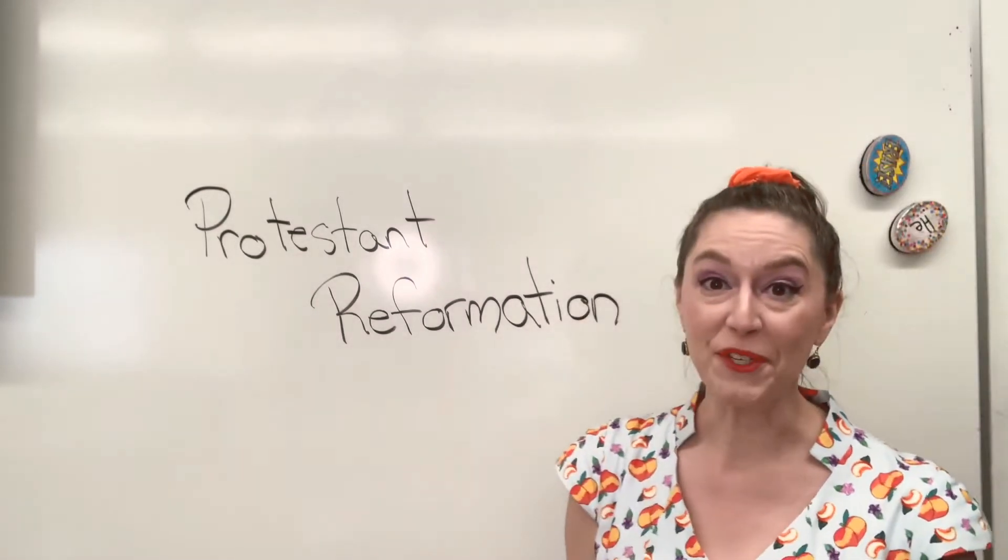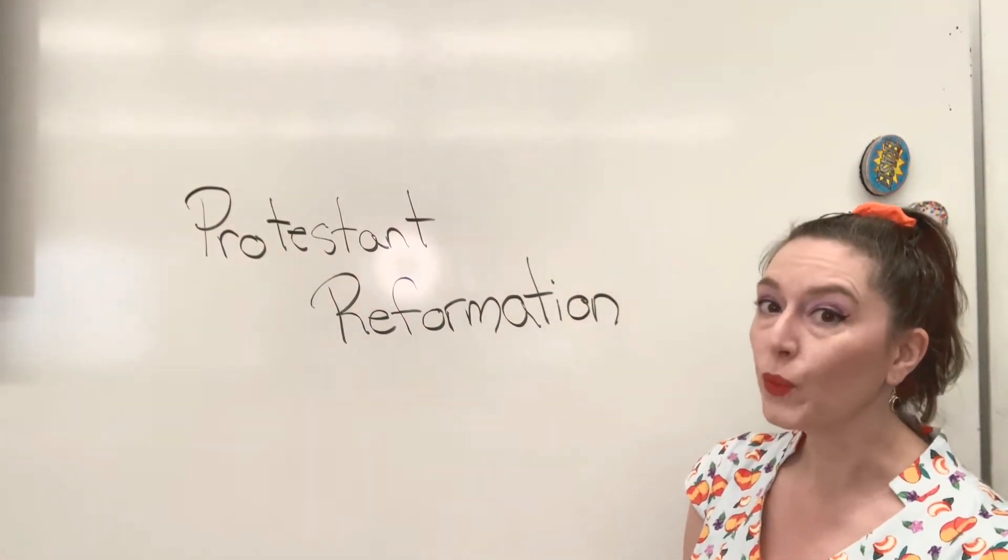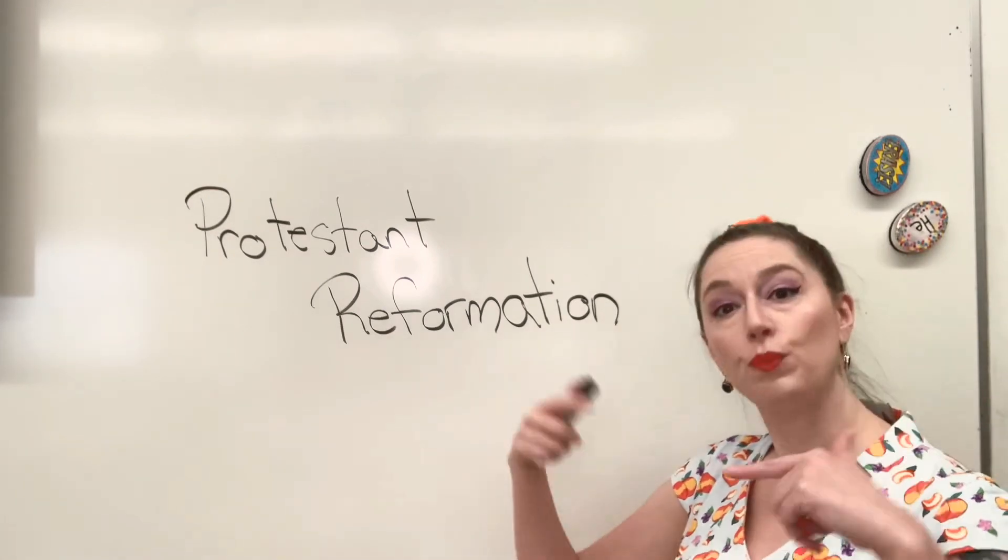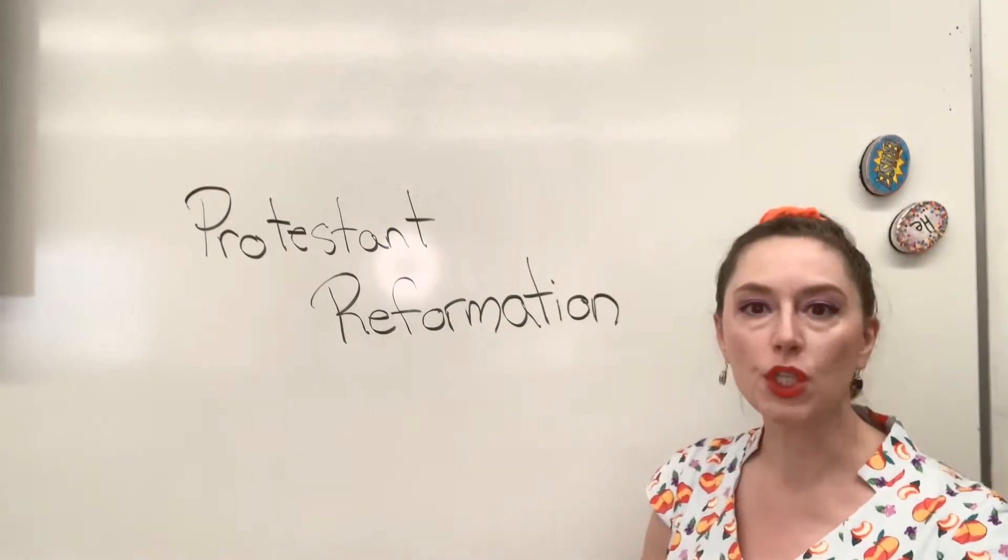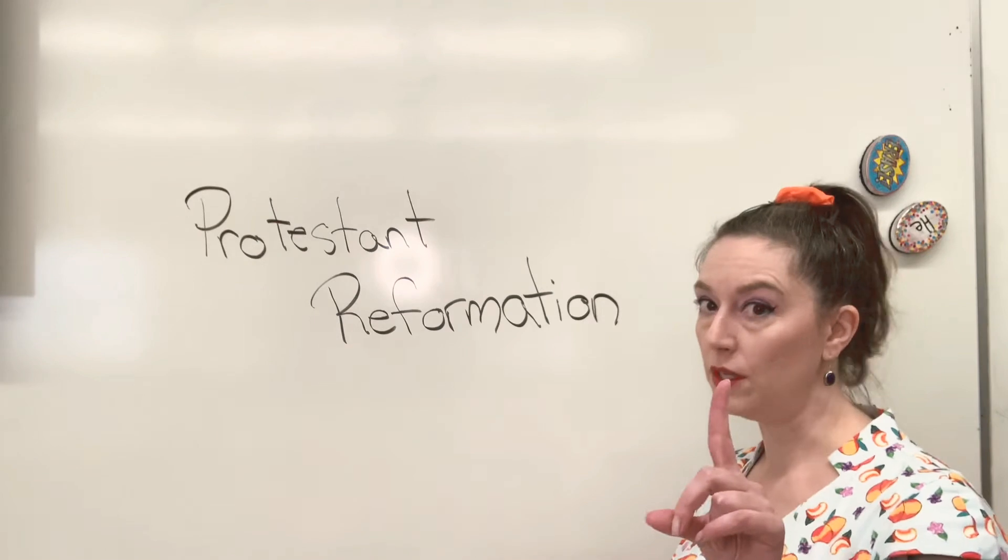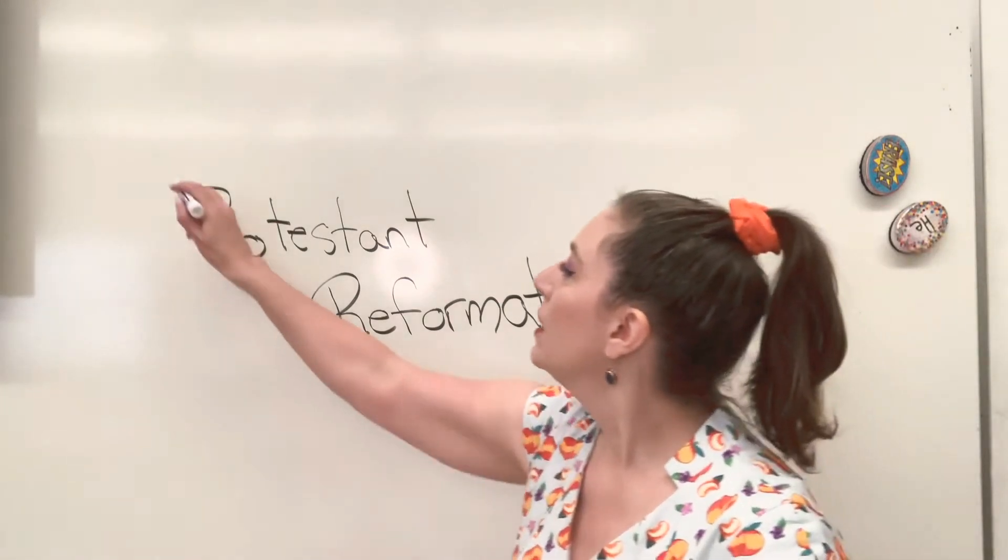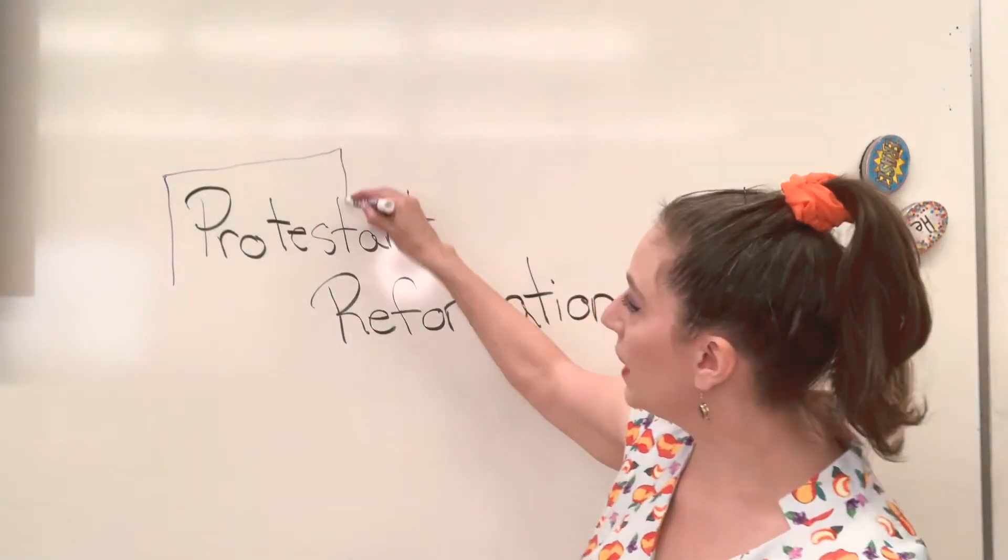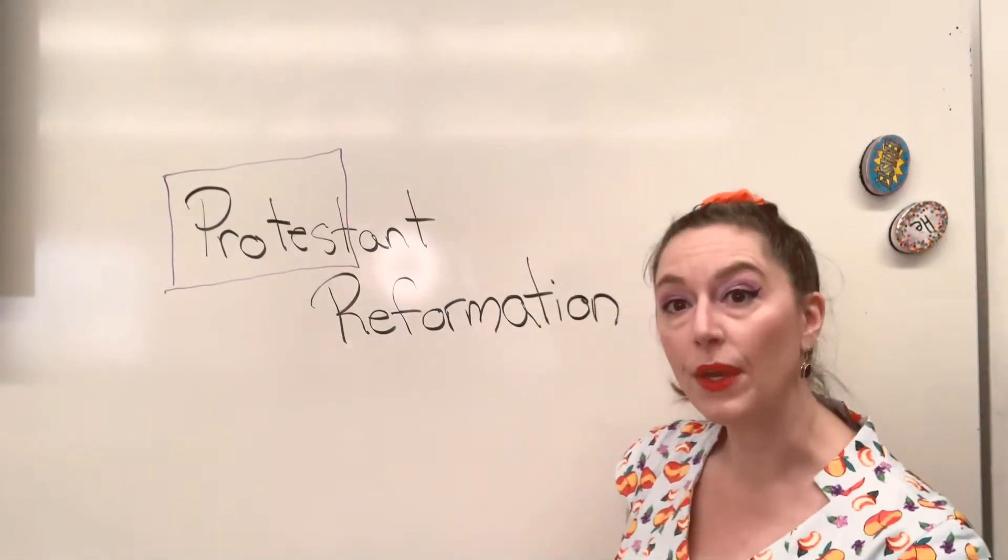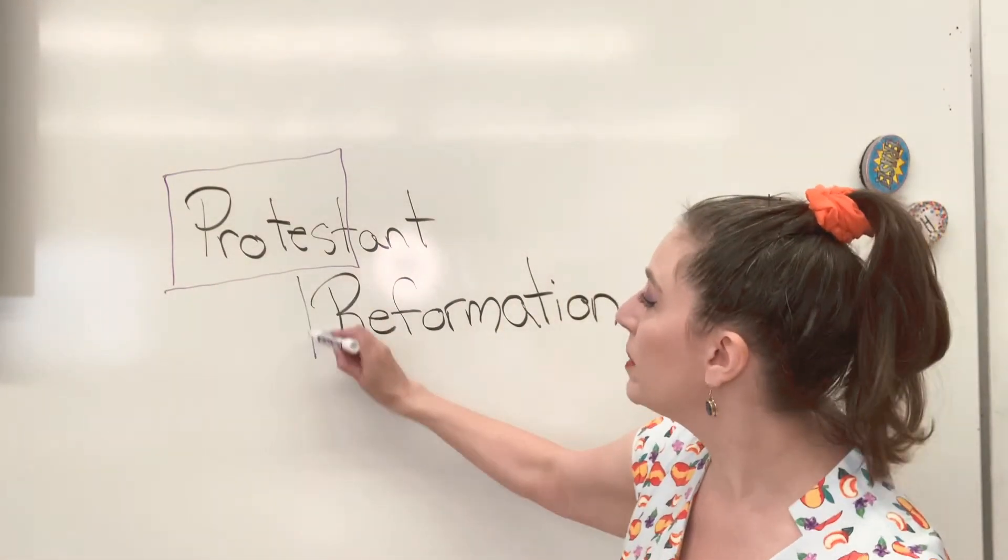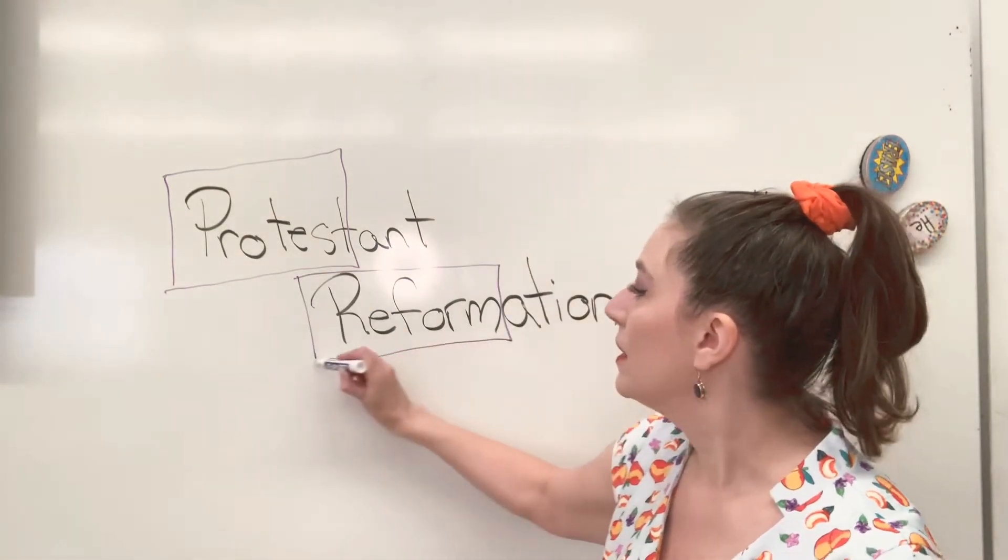All right, I'm sure you got it. So, the Protestant Reformers were literally protesting. They wanted to reform the church. They didn't want to start whole new religious movements, initially. What they wanted was for the heads of the Catholic Church to listen to their protests, and to form themselves differently, to make some changes.